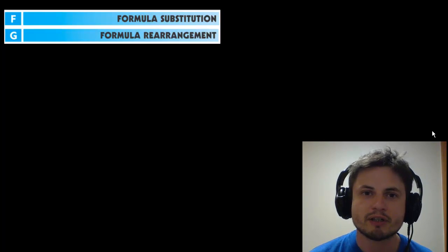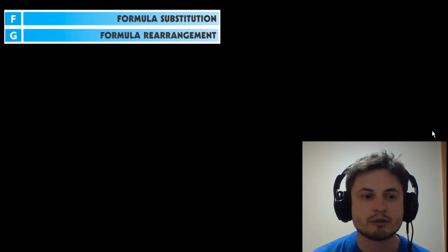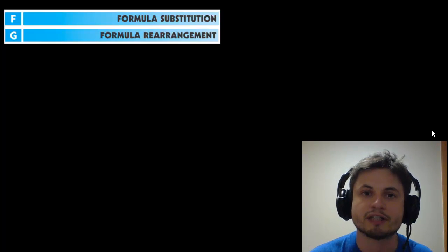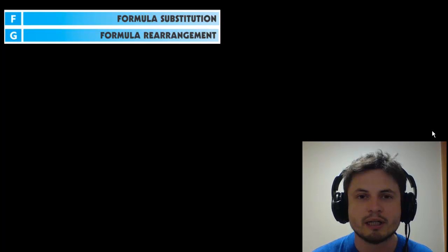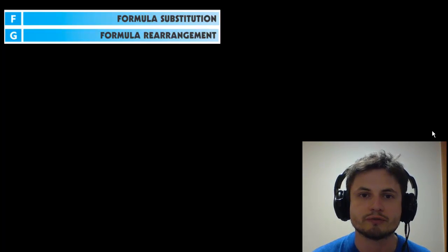So this is when you're given a formula and you have to find a particular variable or a particular value from that formula. For example, you're given a radius and a formula for circumference and you have to find the circumference using the radius. That would be a more simple example. The more difficult example is actually one of the problems in the book, and let's actually try to solve this together.